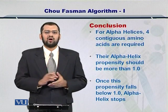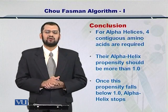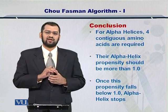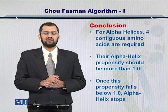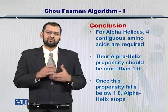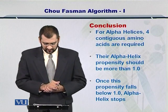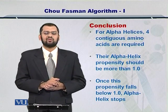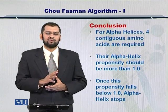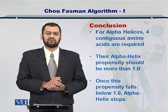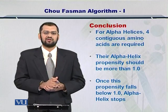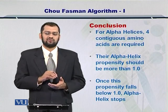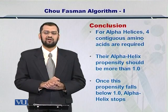In this way, the requirement that 4 amino acids are required to have one complete turn within the alpha helix is used in the Chou-Fasman algorithm towards predicting the secondary structure of the protein. The propensity should be more than 1 for any 4 contiguous amino acids to be part of an alpha helix, and as soon as the overall propensity for any 4 contiguous amino acids drops below 1, that is the end of the alpha helix.